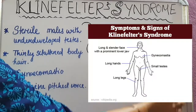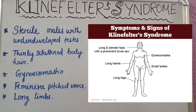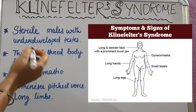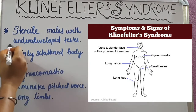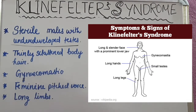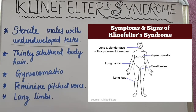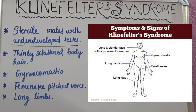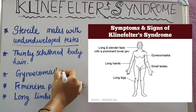Here is a picture showing the symptoms of Klinefelter syndrome. The males are sterile with underdeveloped testes that may not produce sperms. There is thinly scattered body hair, similar to males but sparse throughout the body.